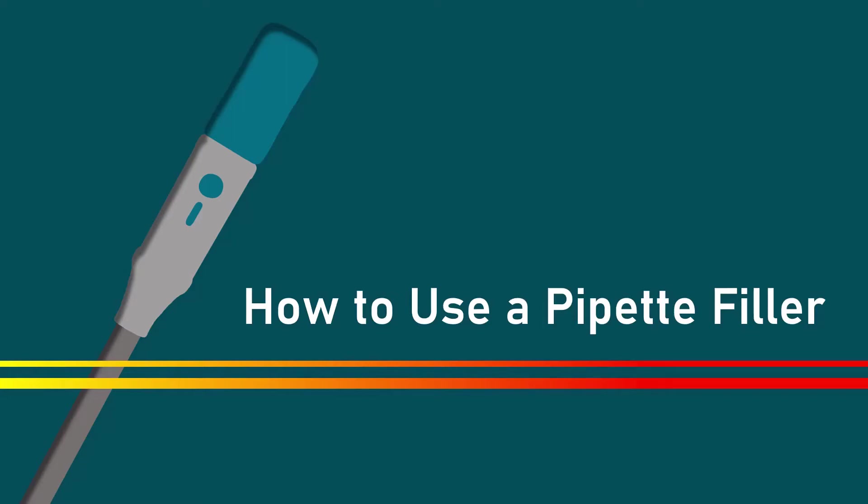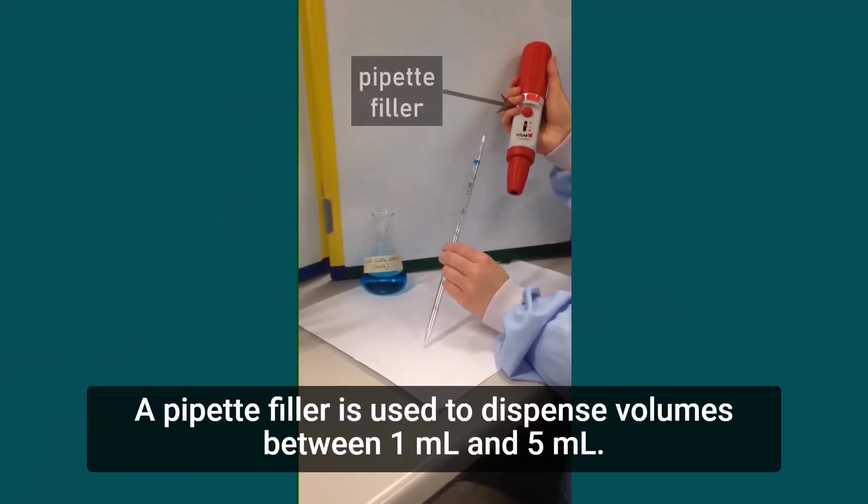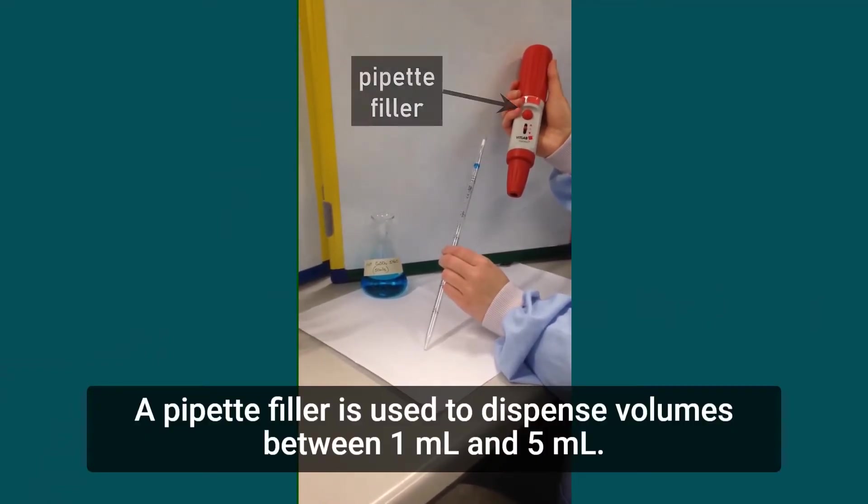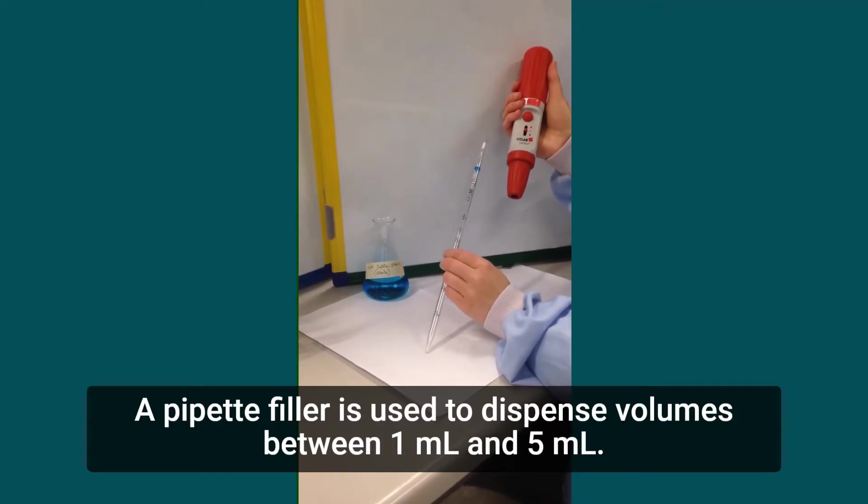How to use a pipette filler. A pipette filler is used to dispense volumes between 1ml and 5ml.